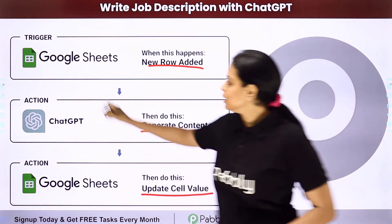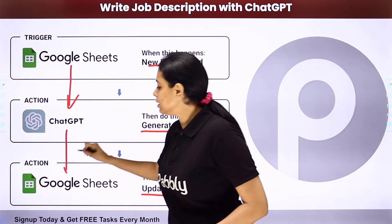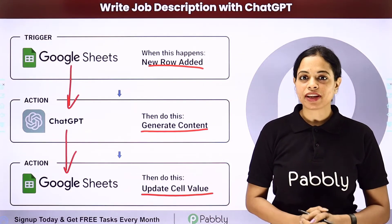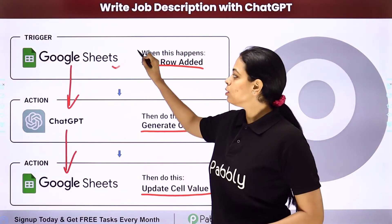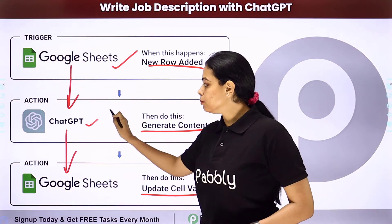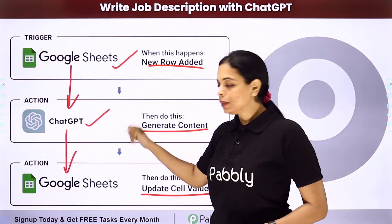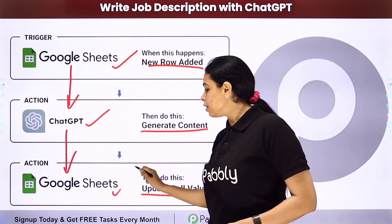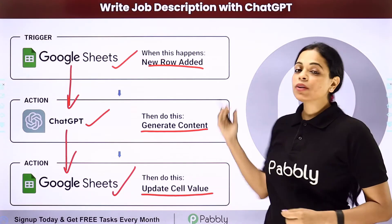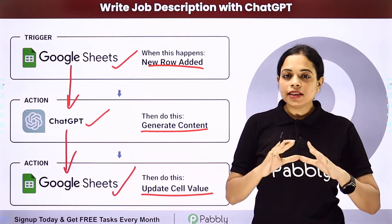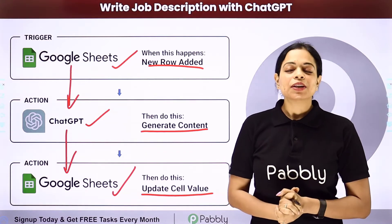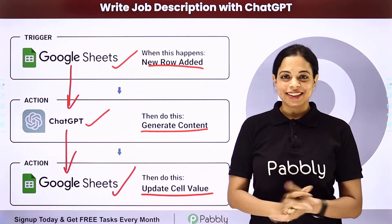To do this, you will have to integrate the applications, and the same thing can be done using Pabbly Connect software. Your trigger application will be Google Sheets, your first action application will be ChatGPT, and then it will be Google Sheets again to update the cell value. Let me take you to my screen to understand how you can integrate and automate this entire process.